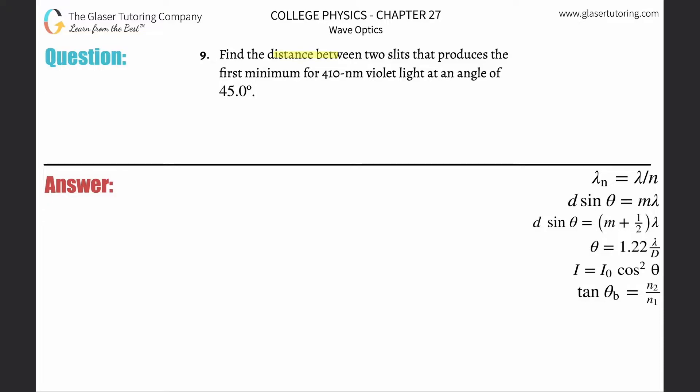Number nine, find the distance between two slits that produces the first minimum for 410 nanometer violet light at an angle of 45 degrees.